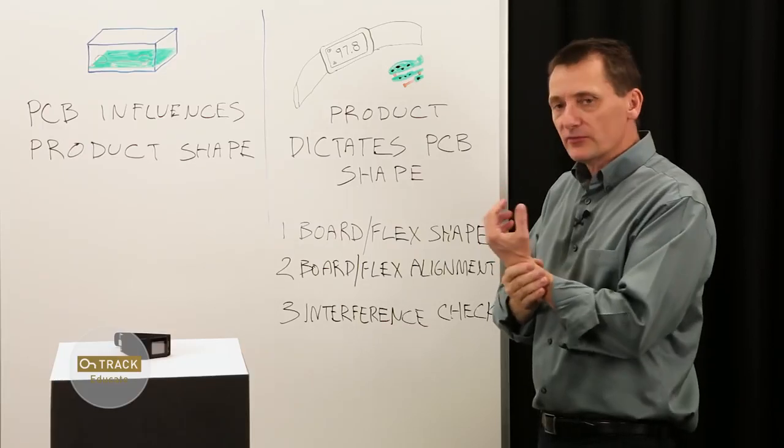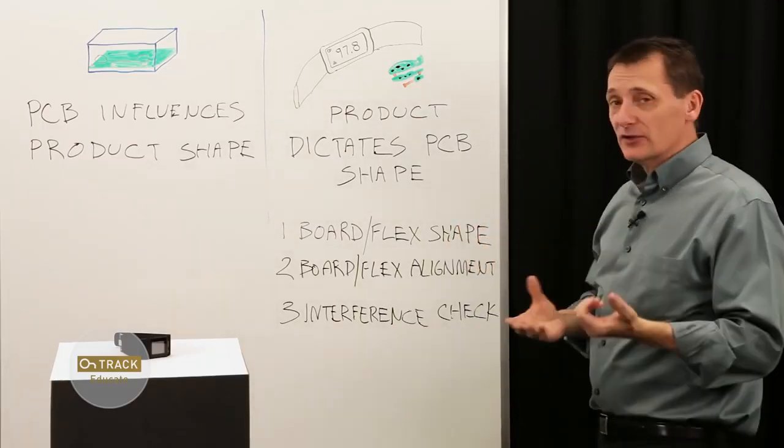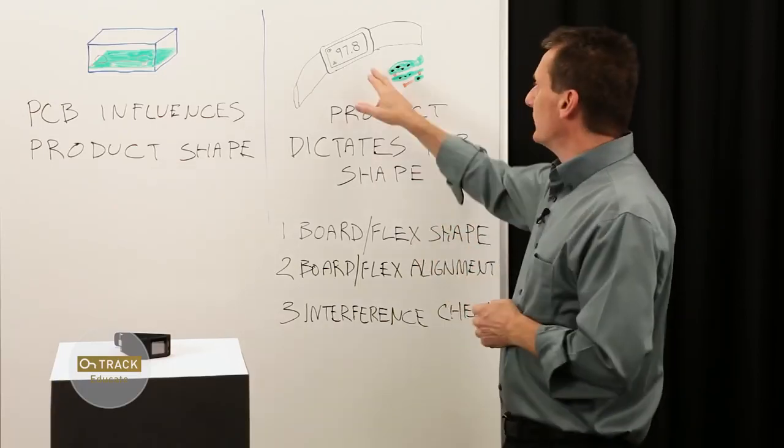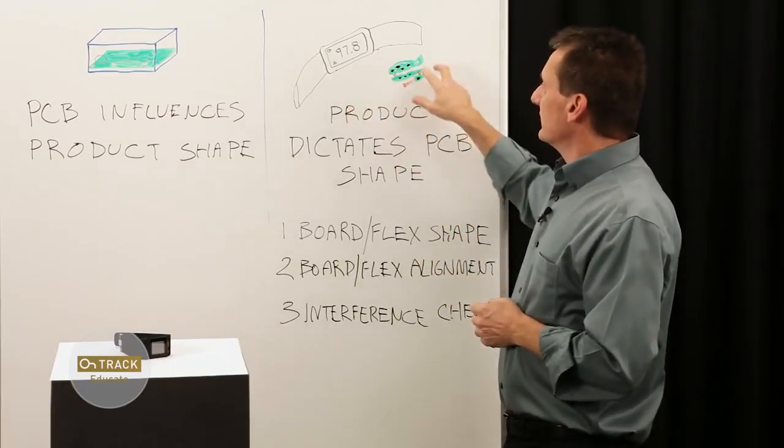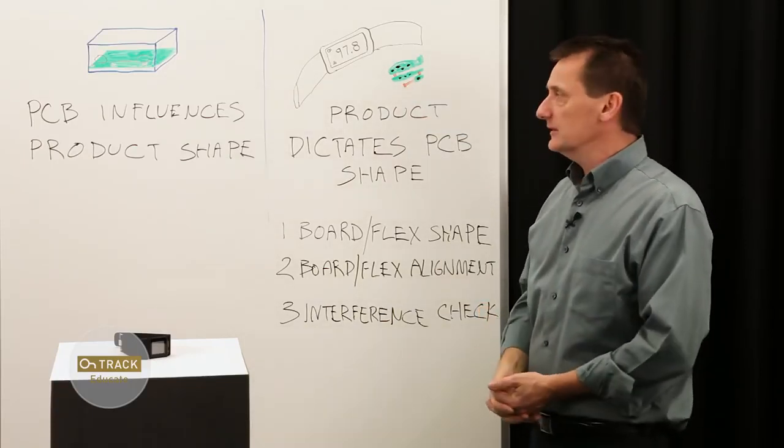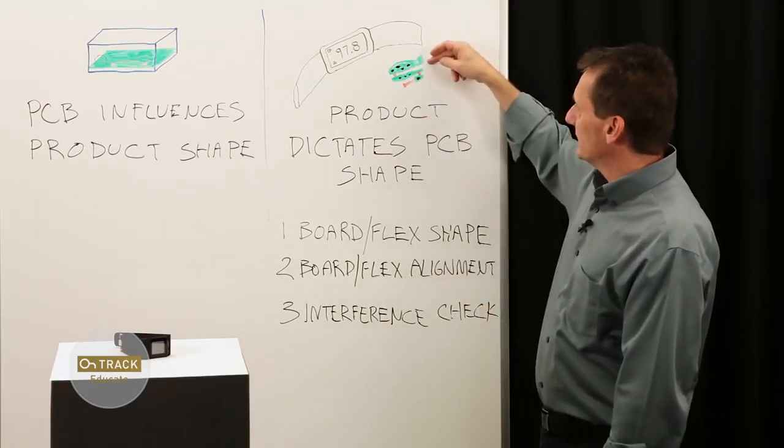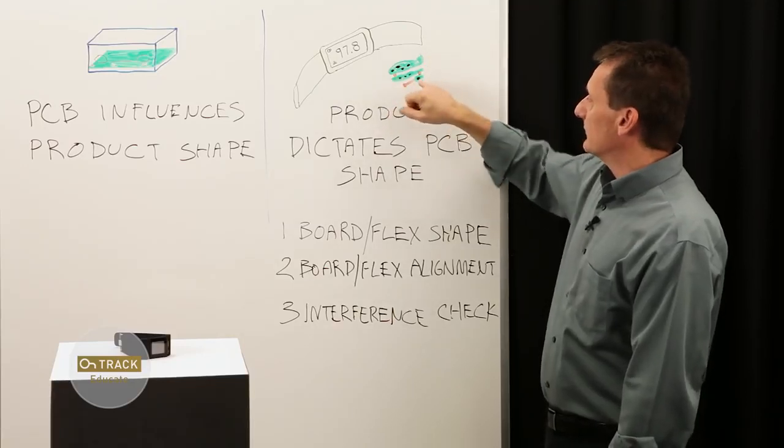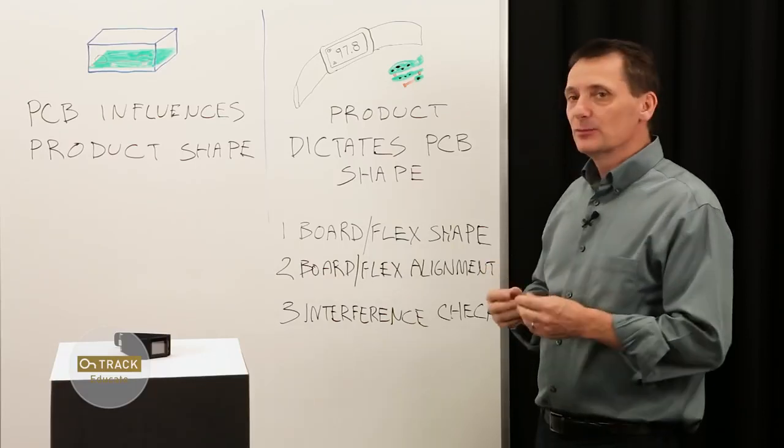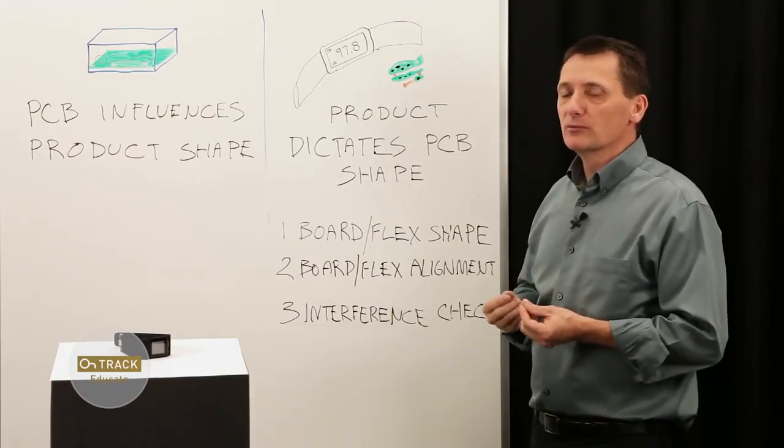So let's take an example of a fitness tracker, something that's very form-fitting, worn on the wrist, a lot of electronics all packed into a very tiny space. Something like this would have a more complex structure for the PCB. In fact, it would be multiple PCBs interconnected with some type of flexible material and occupying a space with very little room left over.